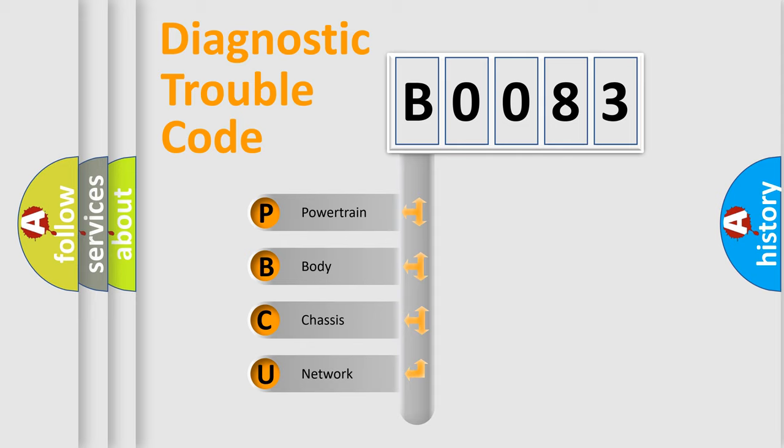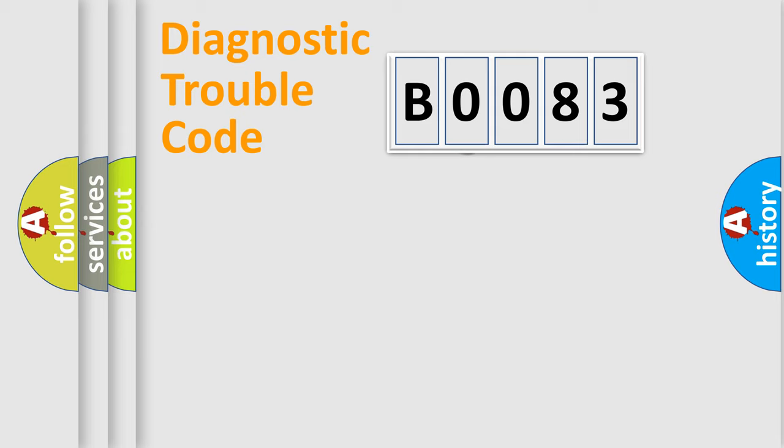We divide the electric system of automobile into four basic units: Powertrain, Body, Chassis, and Network. This distribution is defined in the first character code.